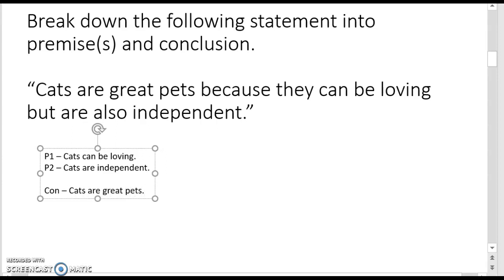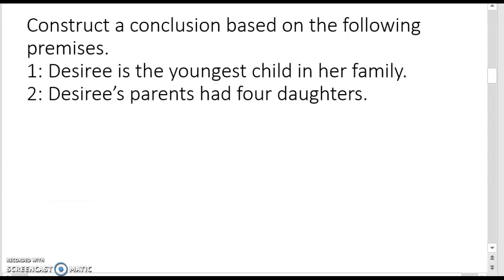That's kind of how we put this together. If we have these two premises, these two statements, we can then use that to create the conclusion, putting them all together in a statement. All right. So now construct a conclusion based on the following premises. Desiree is the youngest child in her family. Desiree's parents had four daughters.